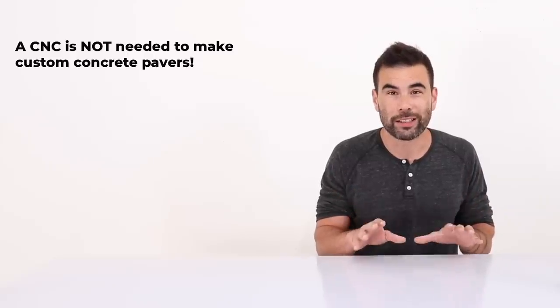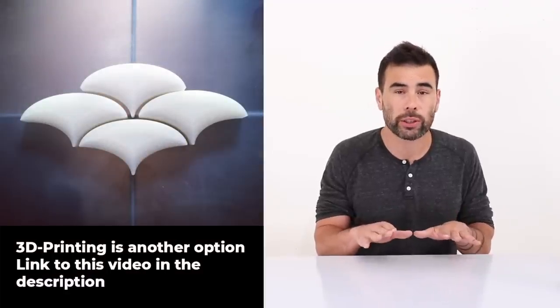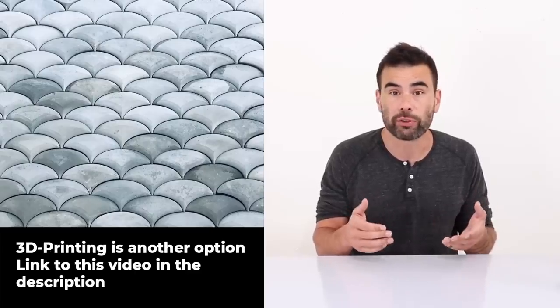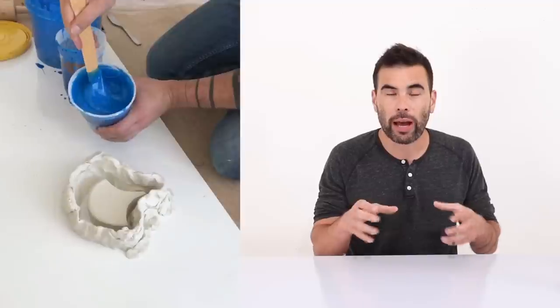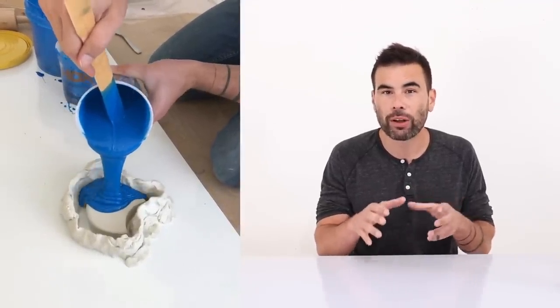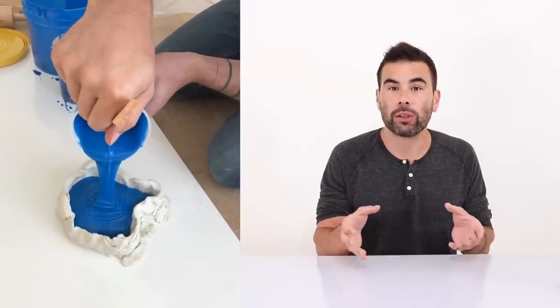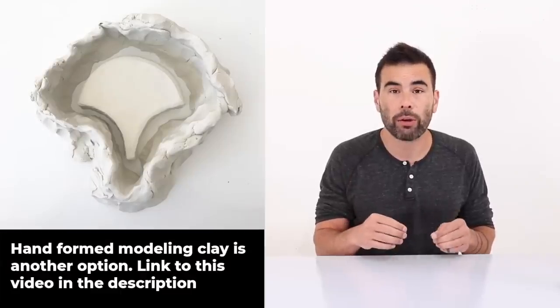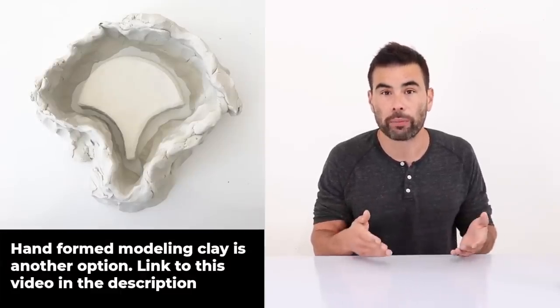Now, you don't need a CNC to do this project, although it does make it a little bit more precise. You could use a circular saw on a straight edge or a track saw to create similar geometries. In my past paver projects, I've used a 3D printer, and I even did one where I molded some modeling clay by hand and made a really kind of cobblestone feeling positive mold. And then I poured silicone right onto the modeling clay. So I'll put a link to that video in the description box below. But check it out and don't get discouraged if you don't have access to this kind of machinery at this particular moment.